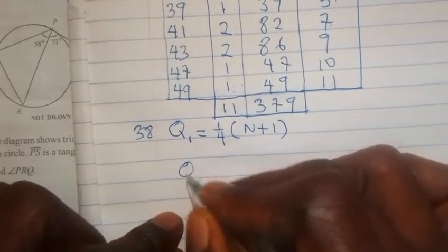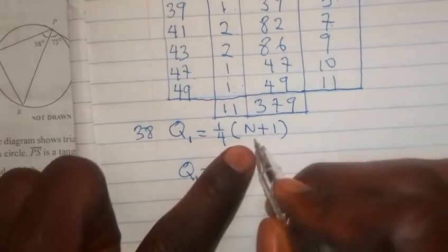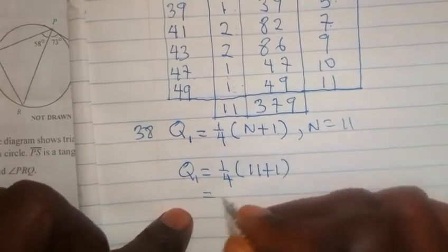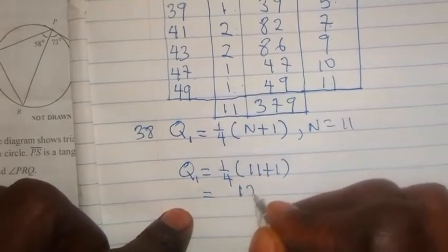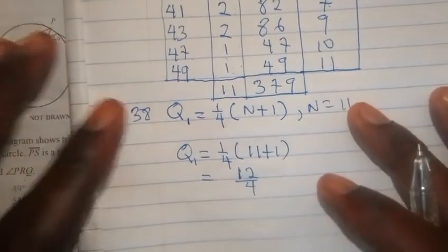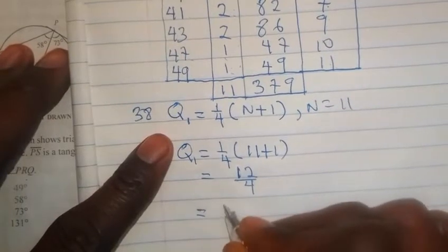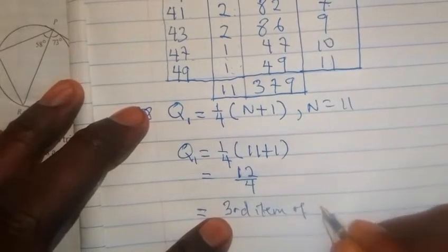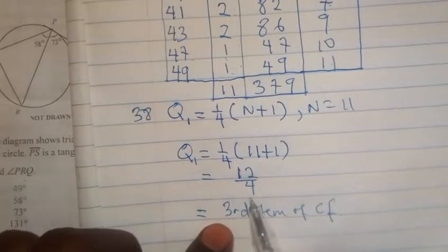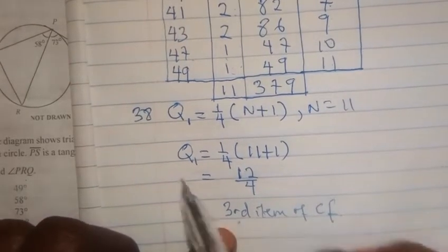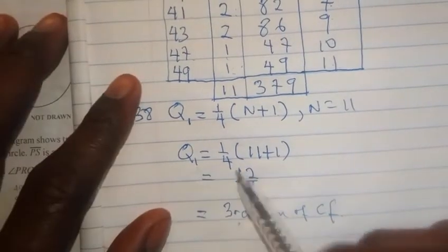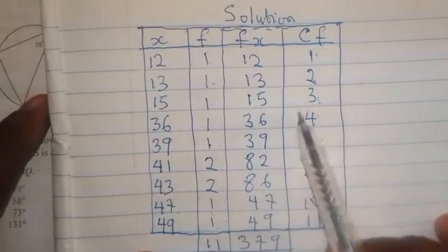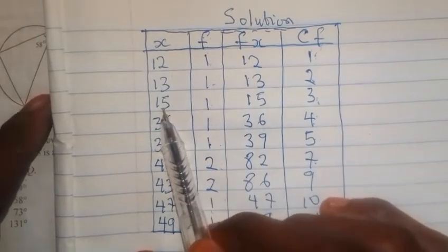So, we come to the next step. We say our Q sub 1 will become 1 upon 4 into n. Our n is what? 11. Based on what we have here. So, put the 11 here. Then plus 1. And this is going to give us 11 plus 1 is what? Is 12. Then we divide that by 4. If we divide 12 by 4, it will give us what? 3. So, we are looking at the third item of the cumulative frequency. So, this 3 that we got here is the third item of the cumulative frequency, which means to get the lower quartile number, all we have to do is to come to the cumulative frequency and look for 3. This is the third item of the cumulative frequency. Then we trace it to see the age that it is, which is what? 15.